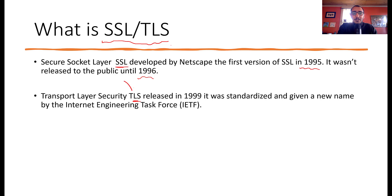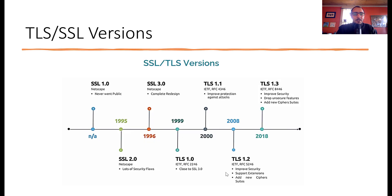Then there was a rebranding. IETF came up with TLS, which was essentially the same as SSL but renamed because some versions had security flaws and some were never even released. The new name was TLS — Transport Layer Security — and that was released in 1999. We can see in the graph that SSL 1.0 never went public, then 1995 saw SSL 2.0 which had a lot of security flaws, and then SSL 3.0.